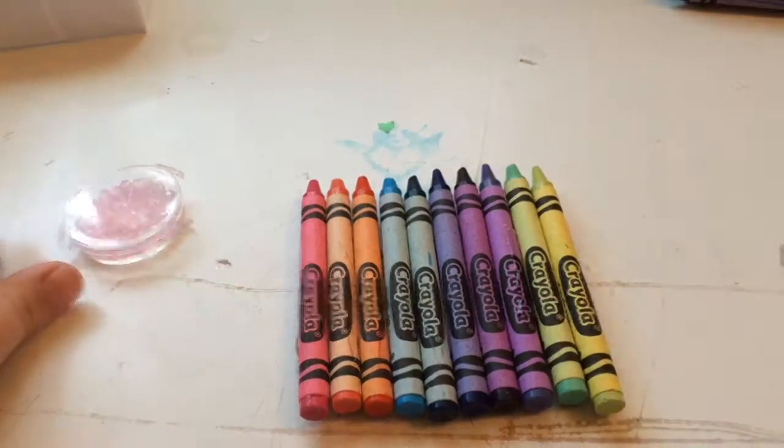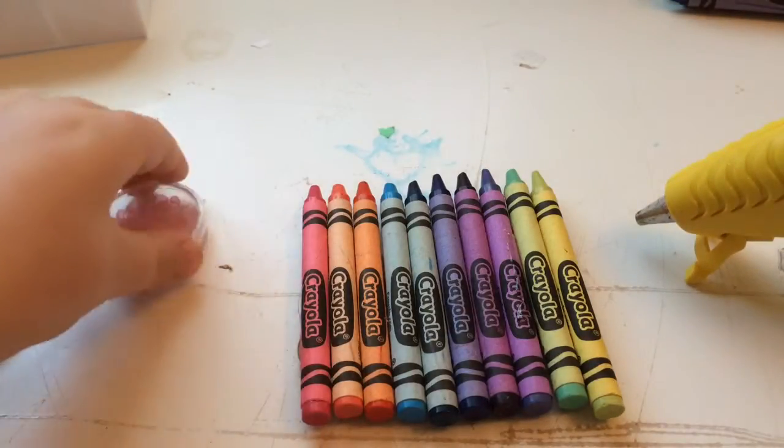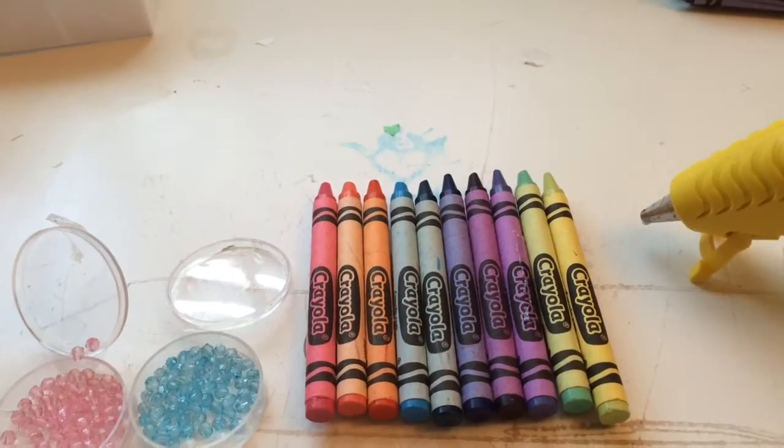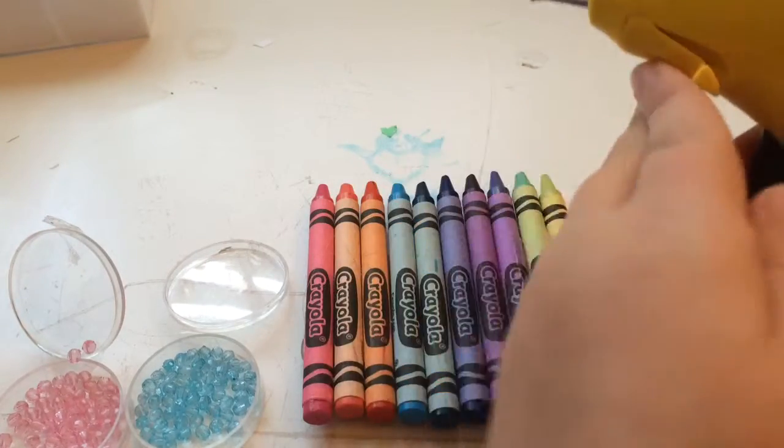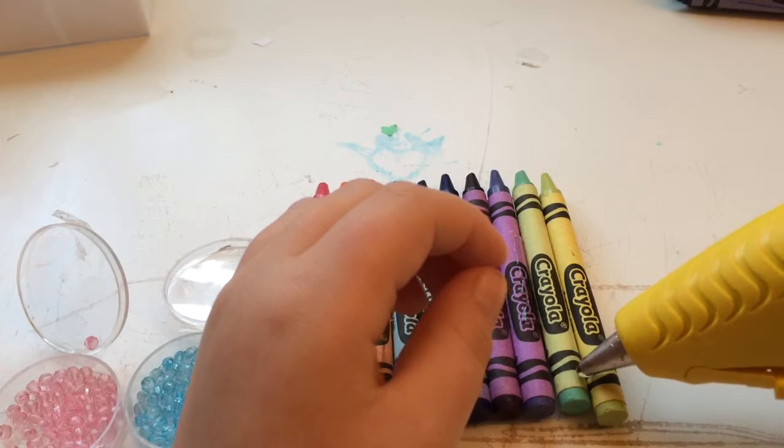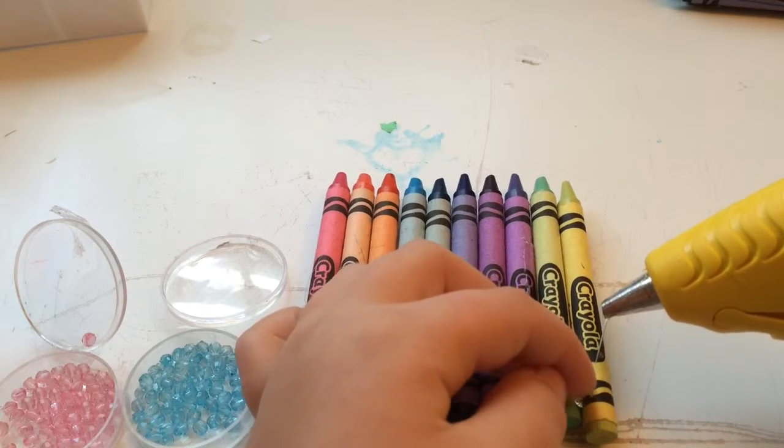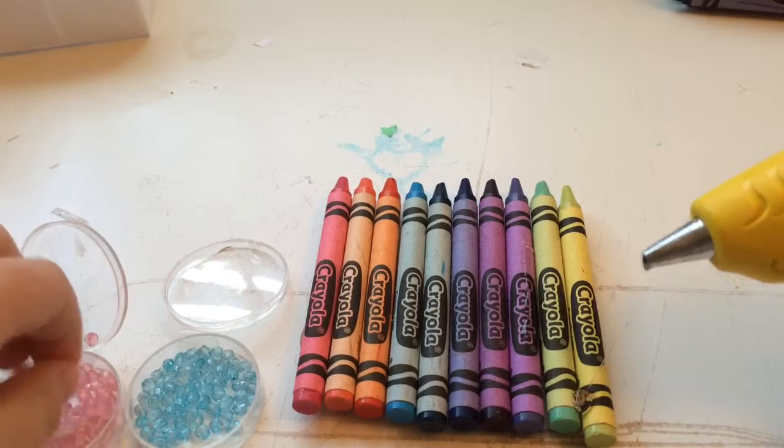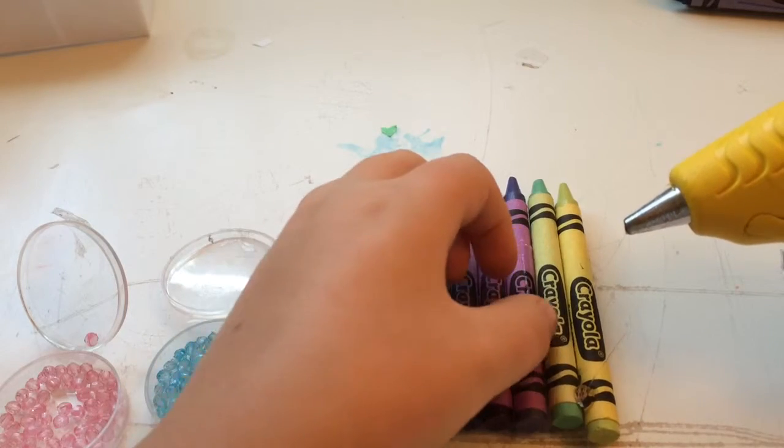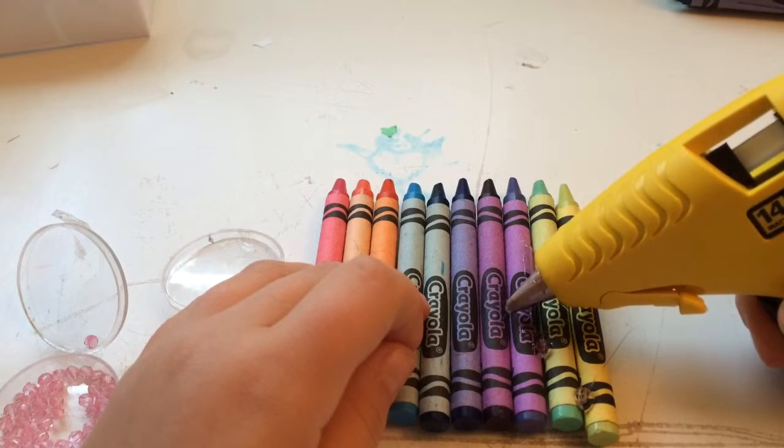And I'm just going to add tiny little beads into it, but this is optional. So I'm going to grab my hot glue gun, grab a bead, just a tiny bit of glue. That's more than a tiny bit, but just remember this is optional.